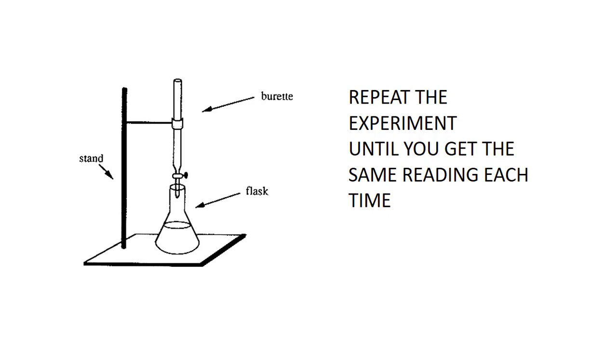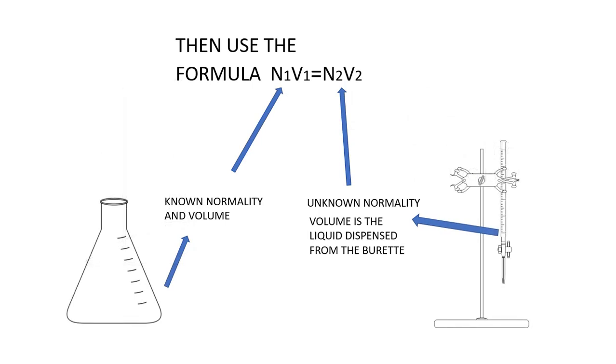Then use the formula N1V1 = N2V2. Here, N1V1 is the known normality and volume. The volume is what you took in the Erlenmeyer flask, and the concentration was known as you had taken it from the round bottom flask.